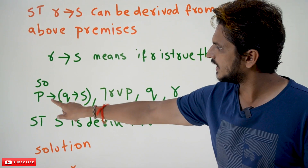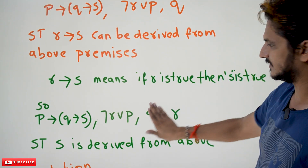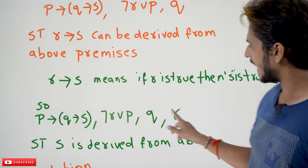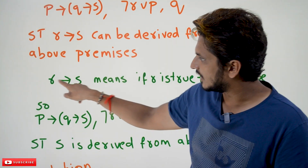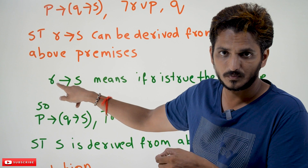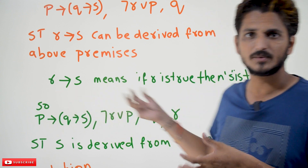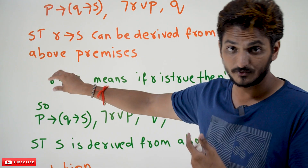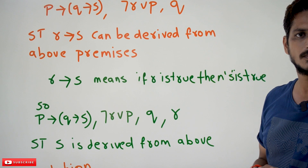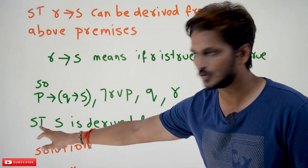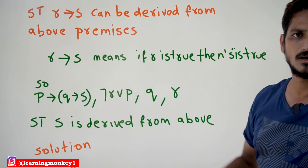The format is: T implies Q implies S — these are the given premises. To this set of premises, we are adding R also. Why can we add R? From the definition, R implies S means if R is true, then S has to be true. Assume that R is true — we can add it as a premise. If you are having a proposition here, take that proposition and add it to your premises. From this set of premises, you have to show that S is derived. Both are the same.